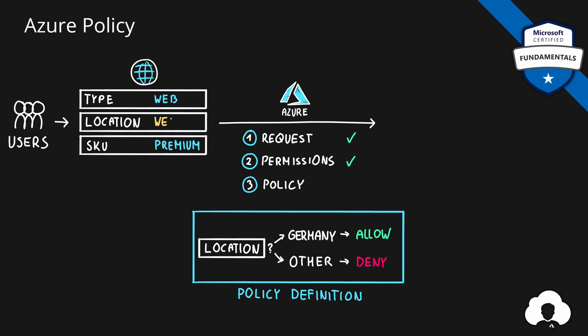If on the other hand our location would be, for instance, West Europe, our policy definition would get a different location to validate and we would go into the deny route. Therefore, this validation would fail and the service would not be created. What's important here to notice is that policies do not check for user permissions. They already assume that the user has a right to create Azure resources because this was checked in a previous step. In case of Azure policy, we check for resource properties to make sure that our resources are compliant with our internal standards.